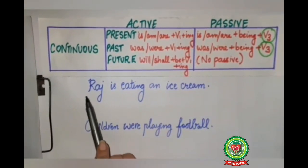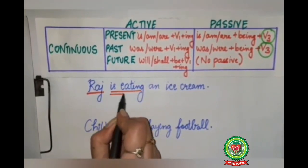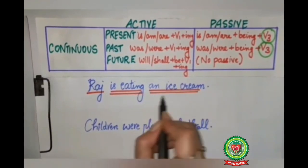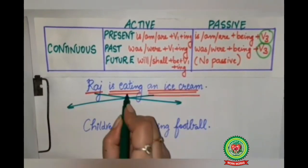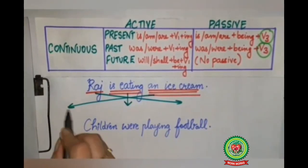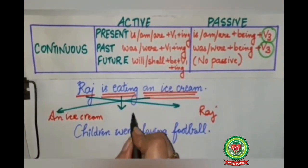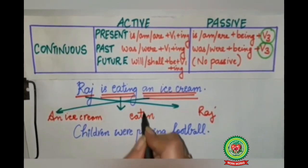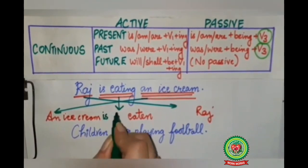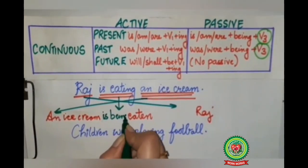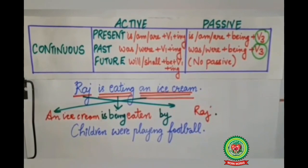Now we'll discuss with examples. The first example: 'Raj is eating an ice cream.' Who? Raj — subject, single underline. 'Is eating' — action word, double underline. 'An ice cream' — object, triple underline. We'll do the similar changes: 'an ice cream' goes to the beginning, Raj goes to the end, 'eating' changes to 'eaten', and after 'is' we will add 'being'. So our sentence becomes: 'An ice cream is being eaten by Raj.' Full stop.